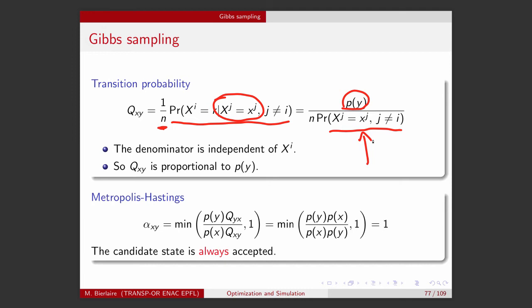And actually, it makes sense intuitively, right? So what we have done is to identify a coordinate. We have erased the previous value and replaced it with a new one. And this does not depend on the value that X had before. So it makes sense that it does not play a role in the transition probability. It means that Q_xy is proportional to P_y.